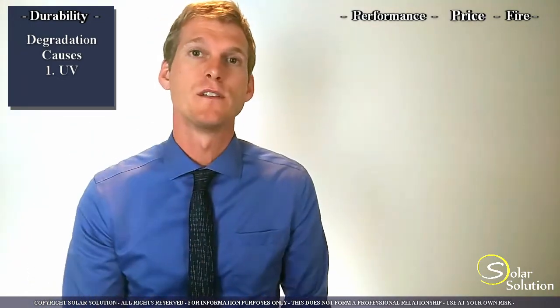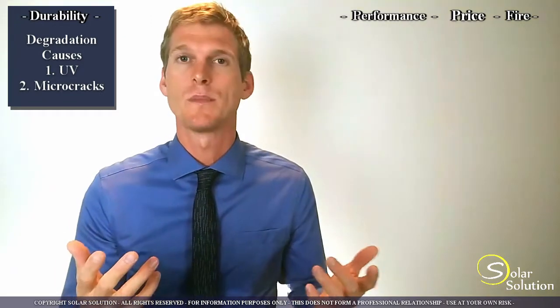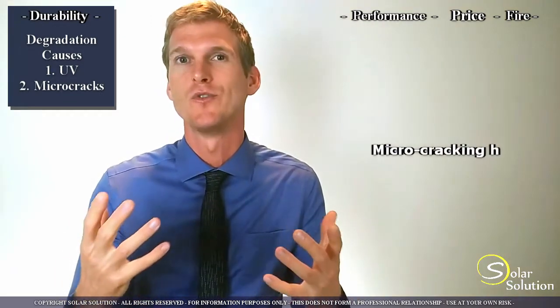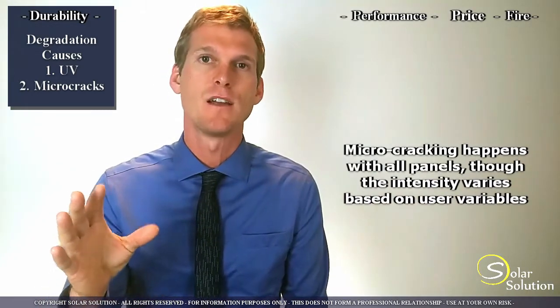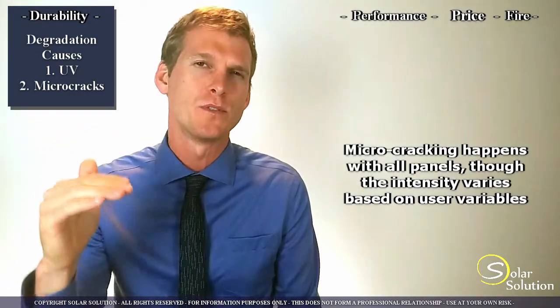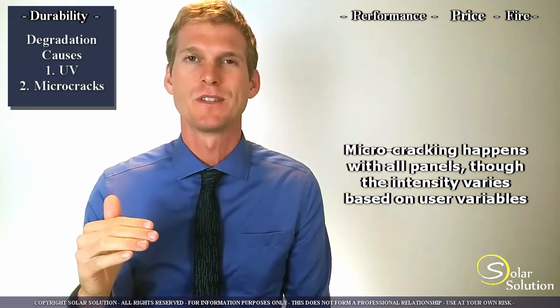Now the second one is the formation of micro cracks. This will always happen in solar panels, it's kind of a normal phenomenon, and will also cause rigid solar panels after 20 to 30 years of lifetime to have a reduced output. The output is reduced by around 20% normally.